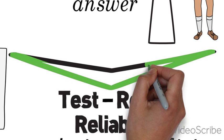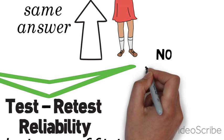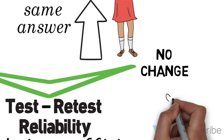Test-retest reliability is just a method of measuring reliability, and like all measures, it's only as good as the way it's used. So what do you need for test-retest reliability to be a good measure of stability?